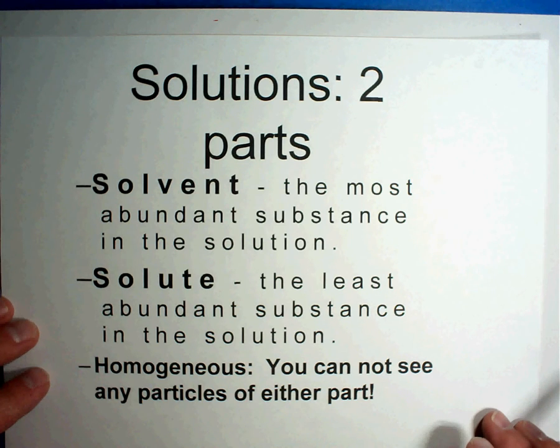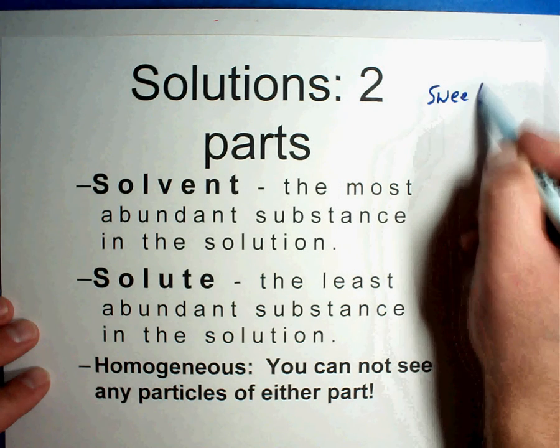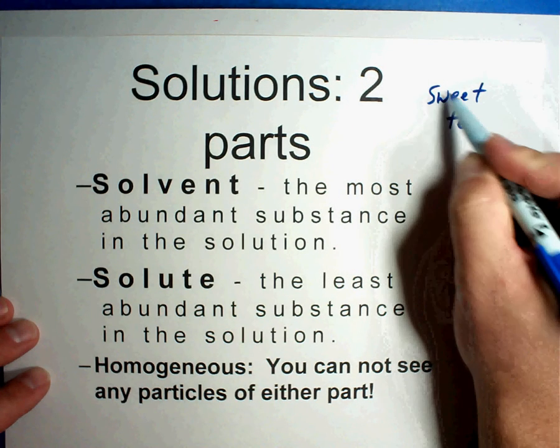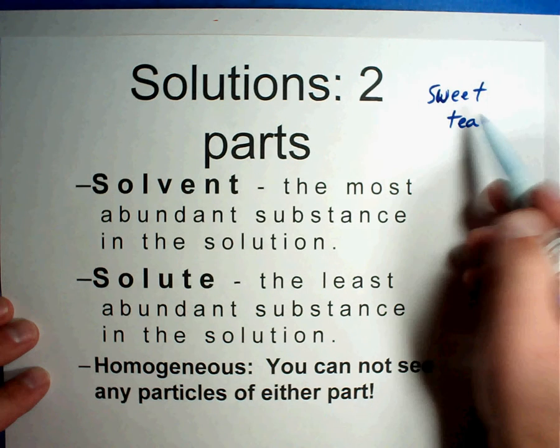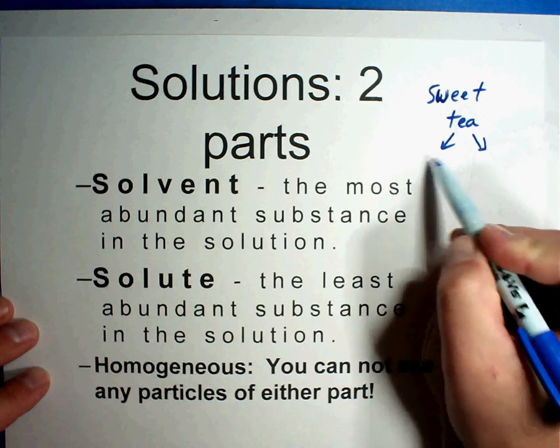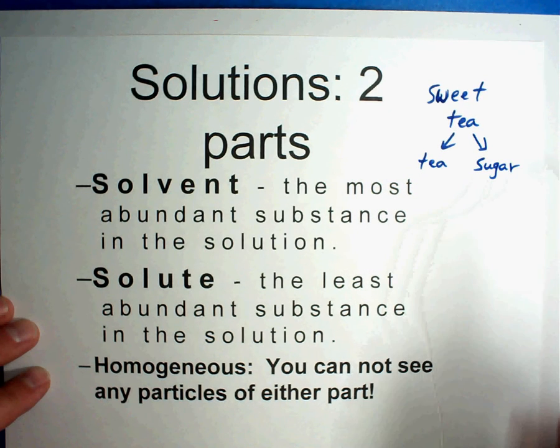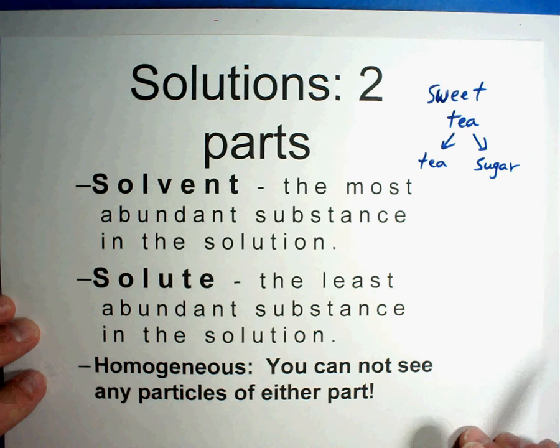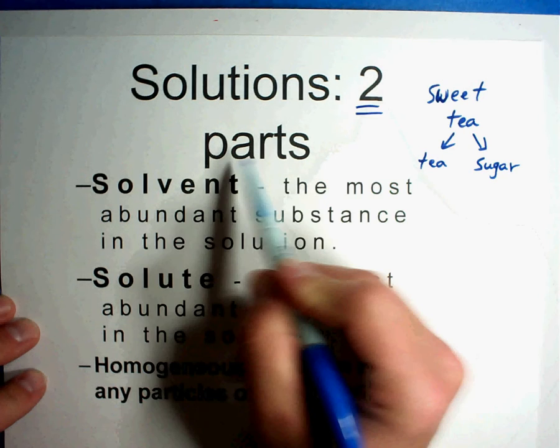All right. Solutions. Now the easiest way for me to teach solutions is what a solution is. So let's talk about sweet tea. Most of us drink sweet tea or know about sweet tea, so this will be a good example. To make sweet tea you need tea and sugar. Now all of us like different amounts of sugar in it, maybe very little at all. But let's talk sweet tea. First of all, there are two parts of every solution. They're called the solvent and the solute, and you already have the definitions.